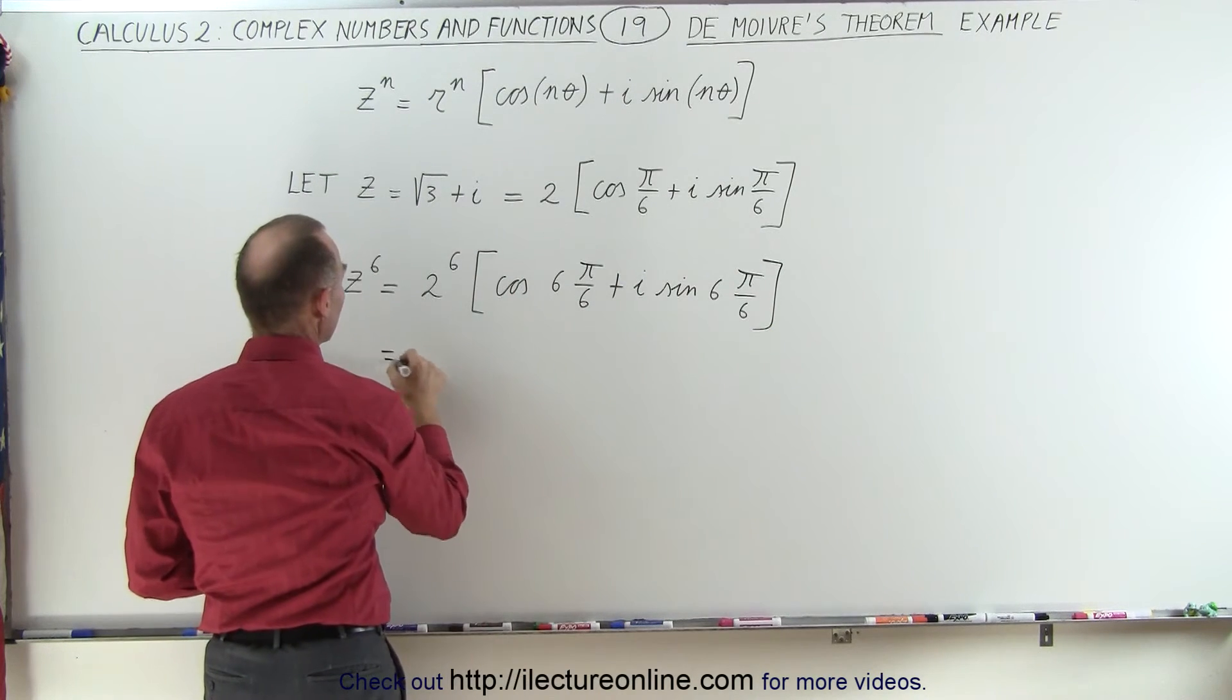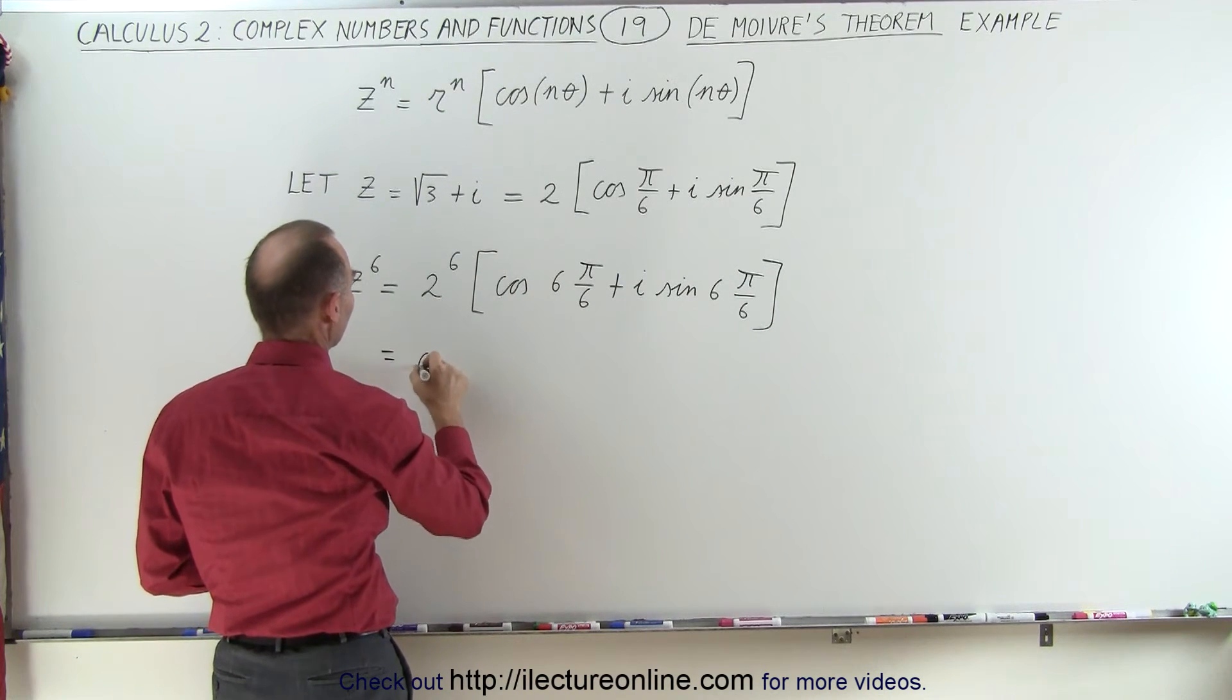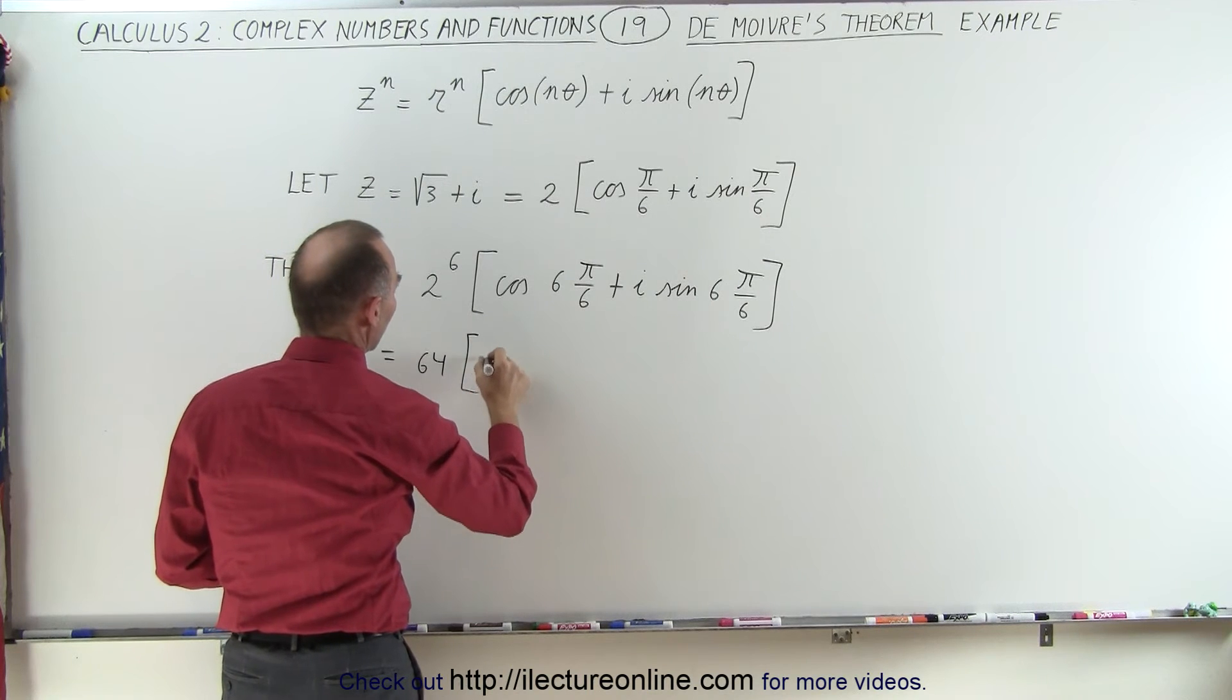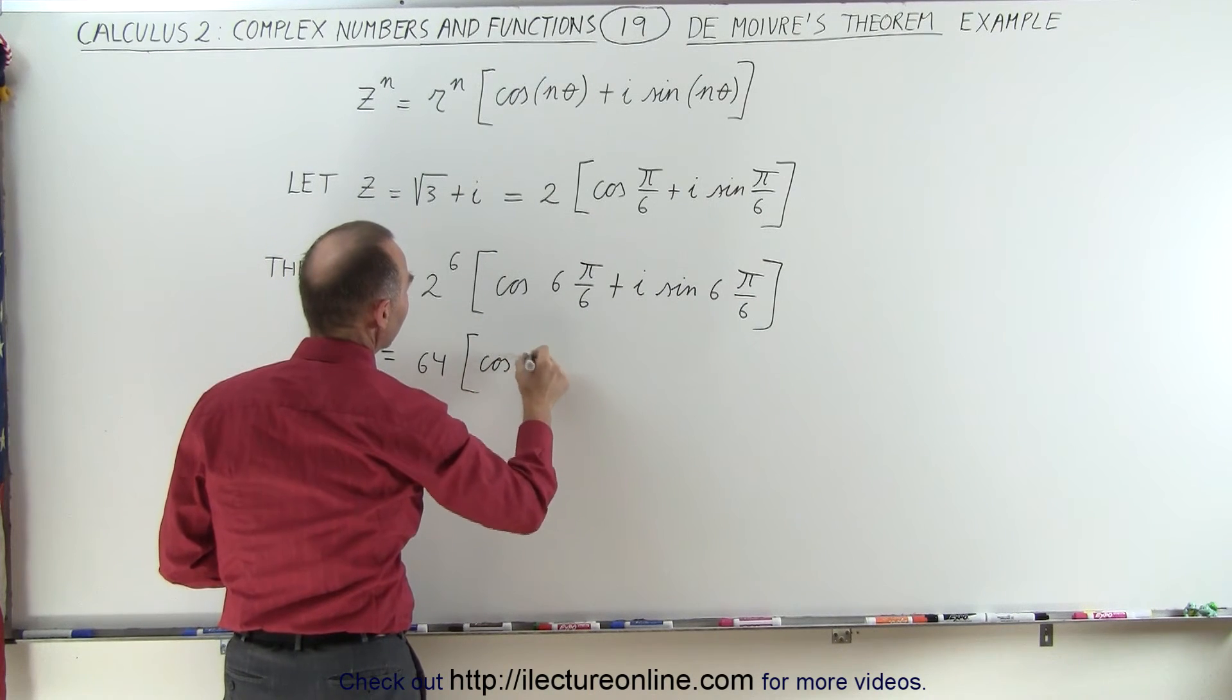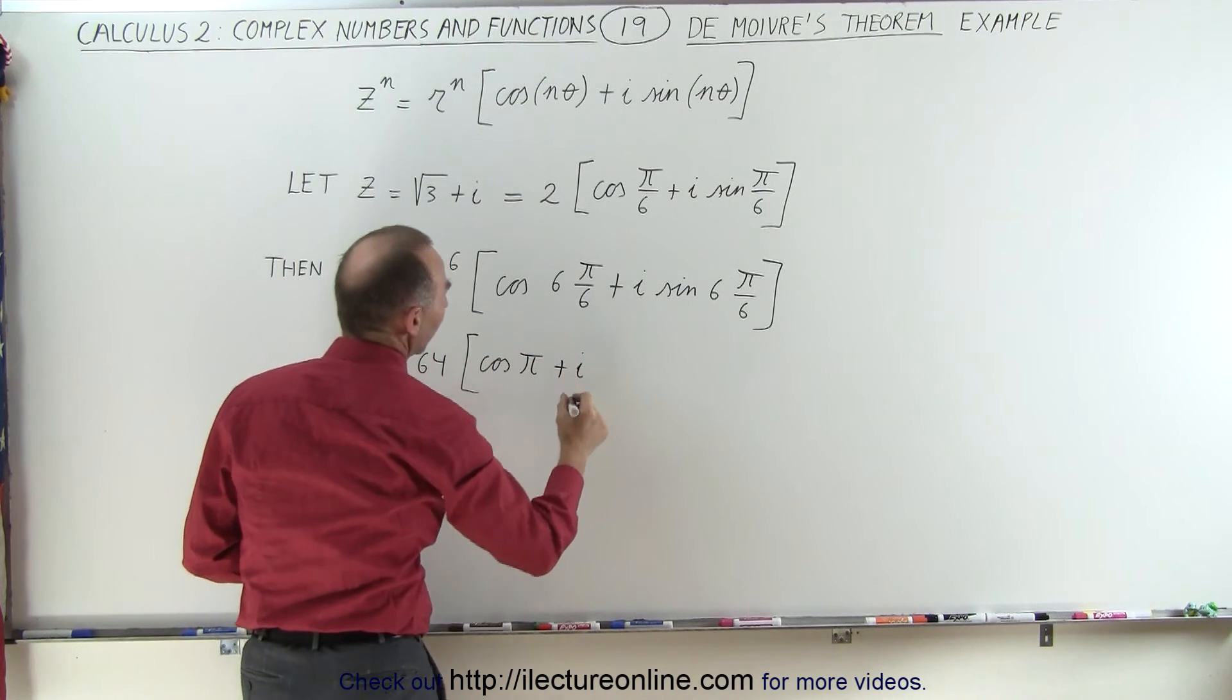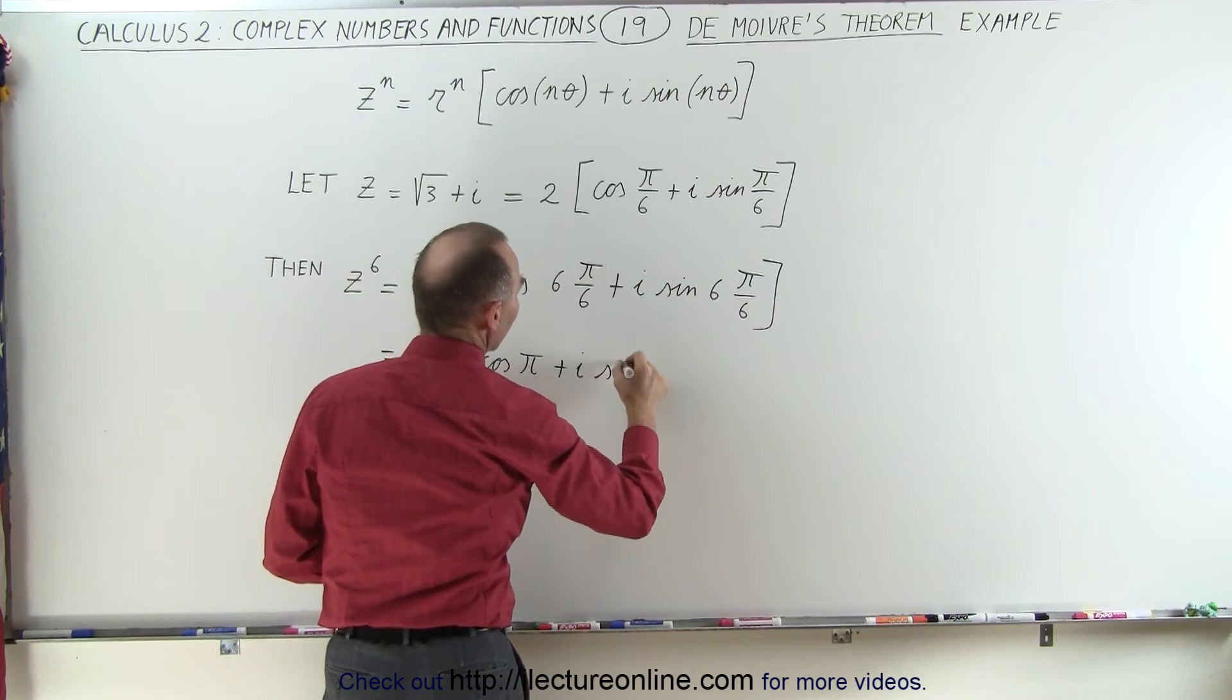In this case, that would be equal to 2 to the sixth power, which is 64 times the cosine of pi, plus i times the sine of pi.